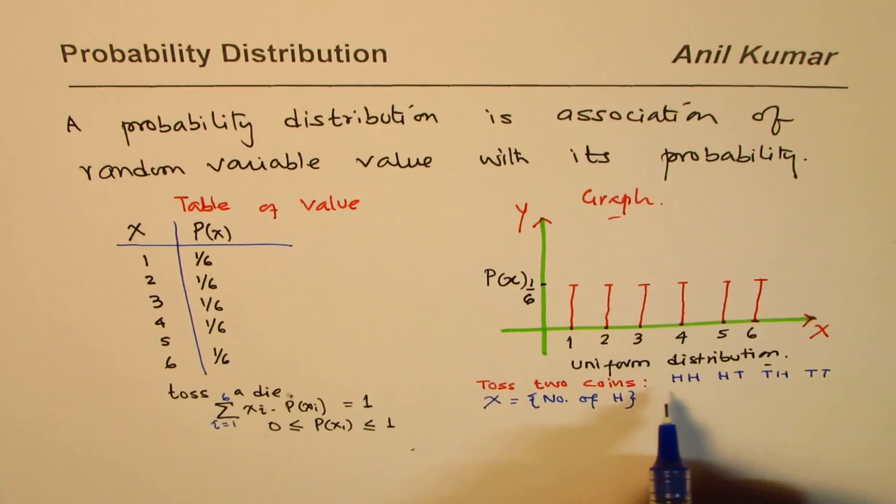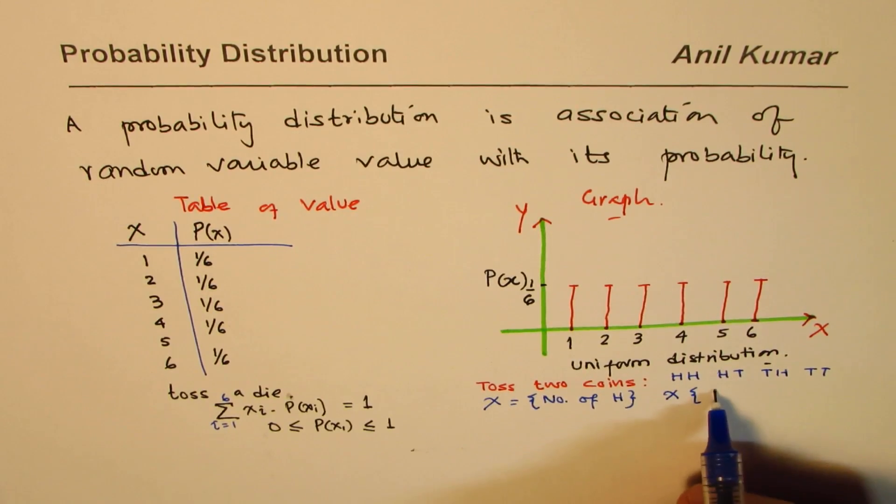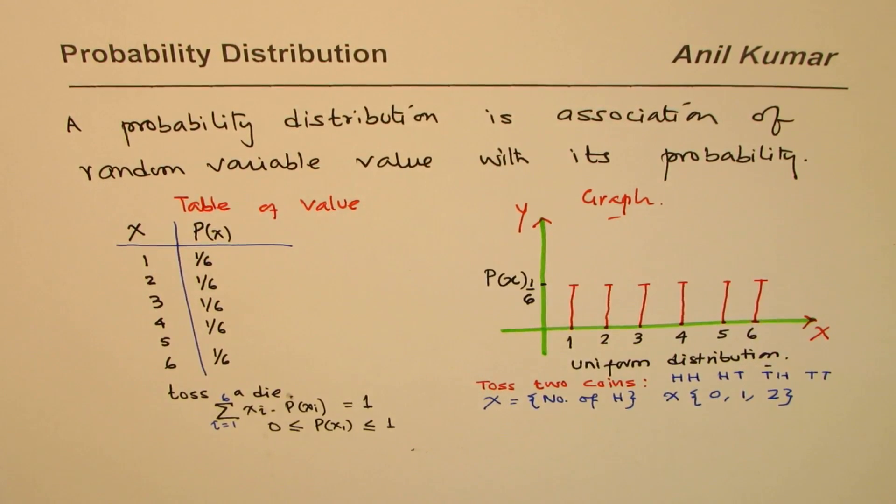In this case, you can define a random variable x as number of heads. So the possible values are, you could have 0 heads, two tails, you could have one head, or you could have two heads.